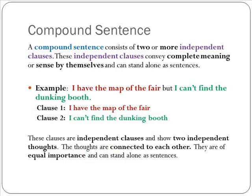Now it's time to look at our second sentence type. A compound sentence consists of two or more independent clauses. These independent clauses convey complete meaning or sense by themselves and can stand alone as sentences. Take a look at our example: I have the map of the fair, but I can't find the dunking booth. Independent clause one is "I have the map of the fair." Independent clause two is "I can't find the dunking booth." These clauses show two independent thoughts. The thoughts are connected to each other and are of equal importance — they can stand alone as sentences.